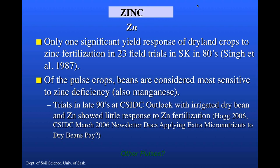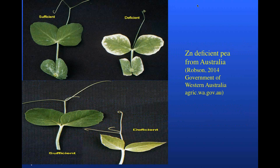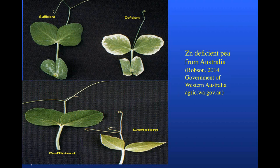Thinking about zinc deficiency in peas, a couple of photos from Australia show a kind of bleaching around the leaf margins. More commonly, a zinc deficiency symptom in general plants is small leaves with a light green or yellow-green color rather than bright green. In fact, zinc deficiency was sometimes historically referred to as little leaf disease. Symptoms such as small leaves, pale green color, and some chlorosis between the leaf veins are probably more characteristic of what you might see for zinc deficiency in pea.